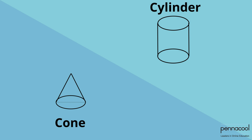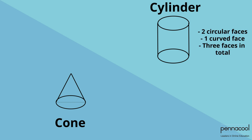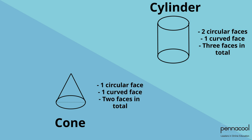Jadon's dad shows him that the cylinder has two circular faces and one curved face that goes all the way around, making three in total. On the other hand, a cone has one circular face and one curved face, making two faces in total.